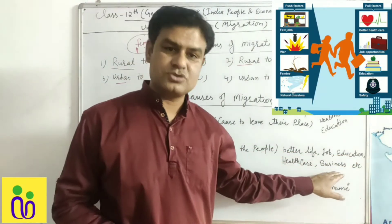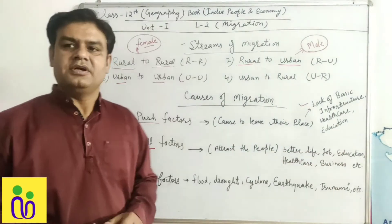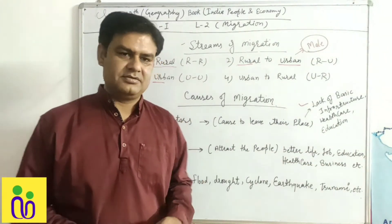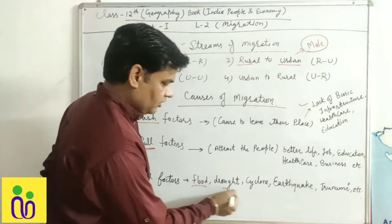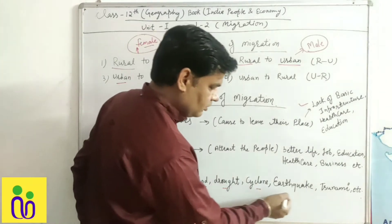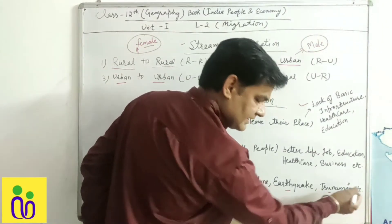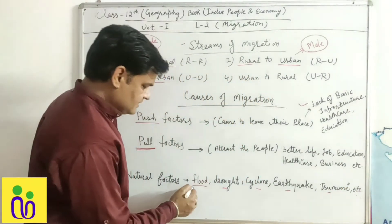Next — disasters के कारण भी migration होता है। For example: flood, drought, cyclone, earthquake, tsunami etc.